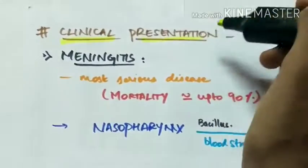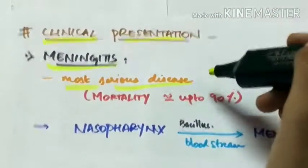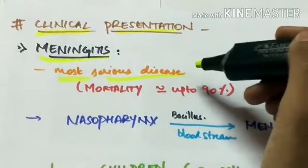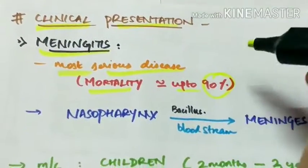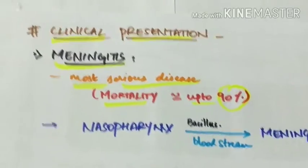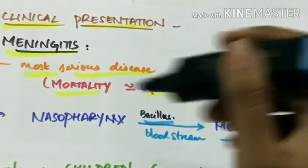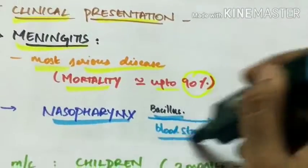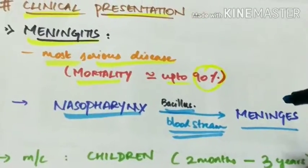Now coming to the clinical presentation. First, meningitis. This is the most serious disease caused by Haemophilus influenzae in which the mortality is up to 90%. The bacillus enters the meninges from the nasopharynx through the bloodstream and thereby causes meningitis which is inflammation of the meninges.